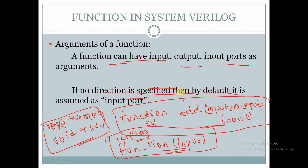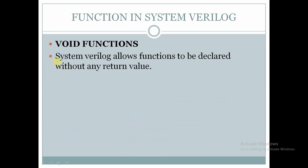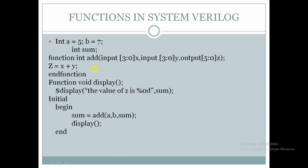These are the differences between functions in Verilog and functions in SystemVerilog. If no direction is specified, then by default it is assumed as an input port — if in the arguments of the function we do not declare any input or output, it is declared as input by default. Void functions in SystemVerilog: SystemVerilog allows functions to be declared without any return value; these functions without any return values are called void functions.